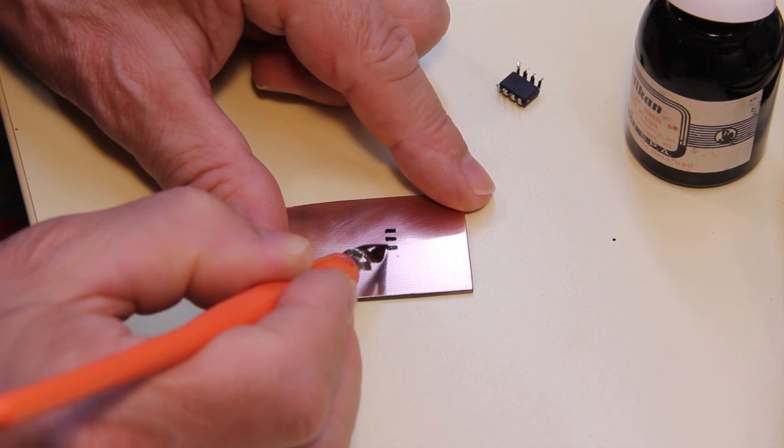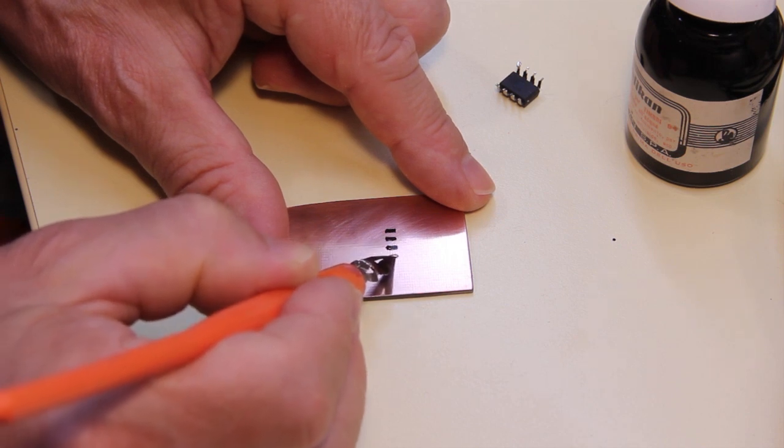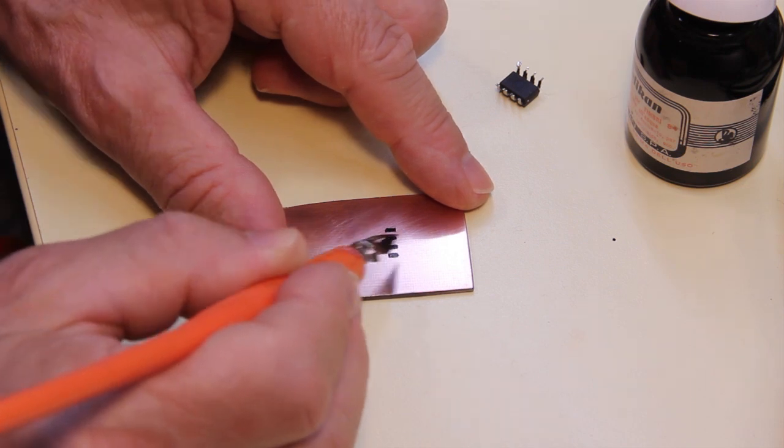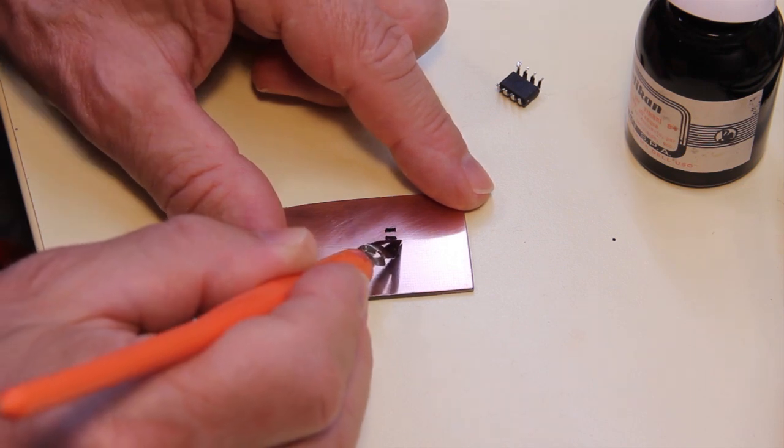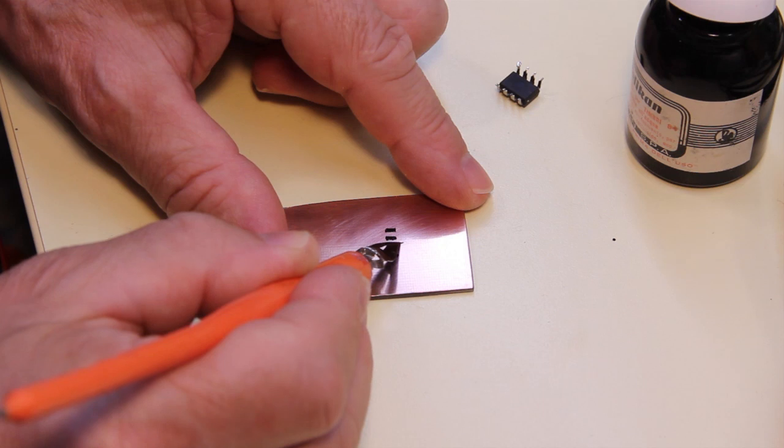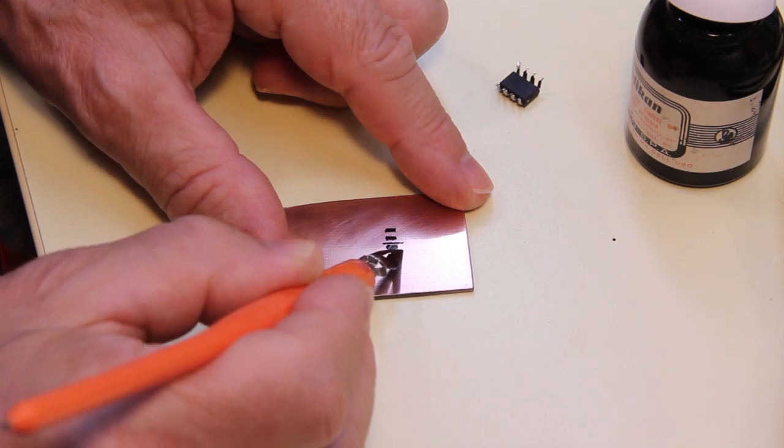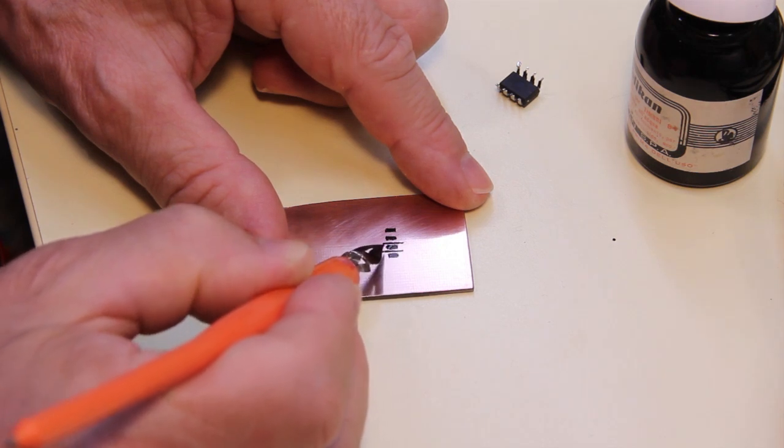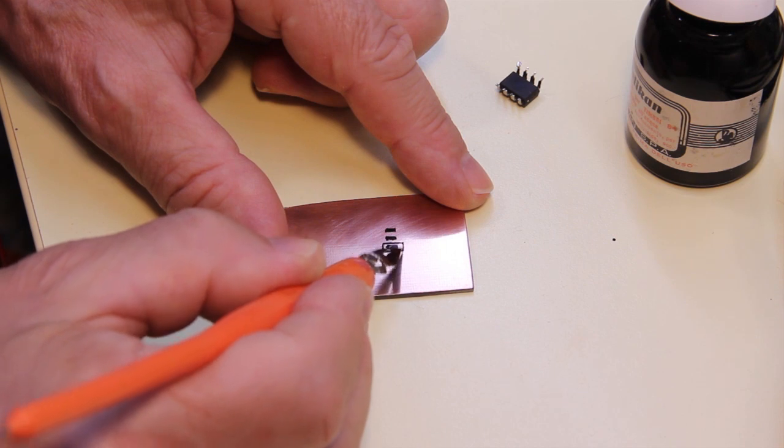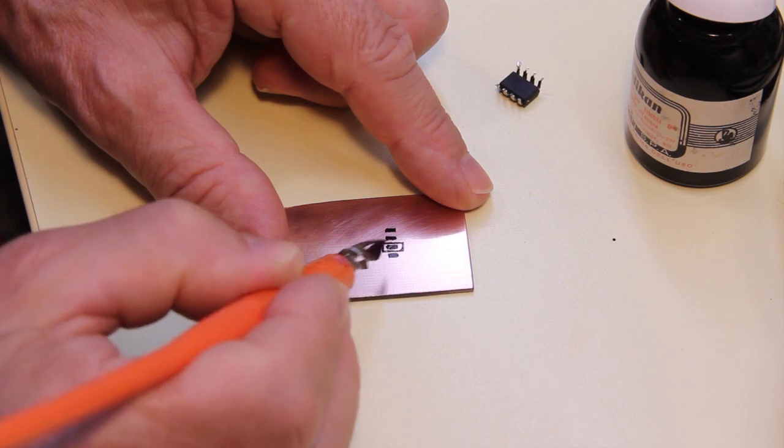I do this work with a magnifier, but I have removed the magnifier to let you see through the camera, so I'm not sure exactly what I'm doing. As you can see, it is possible to draw very fine lines.